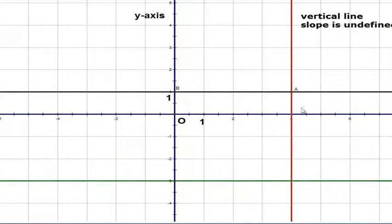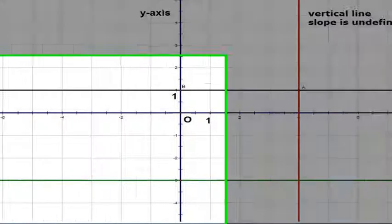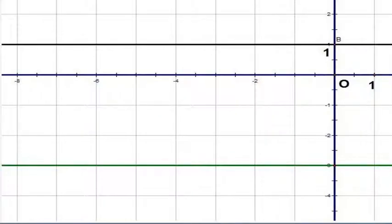Now let's look at a vertical line. We know that for a vertical line, the slope is undefined.